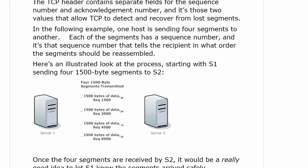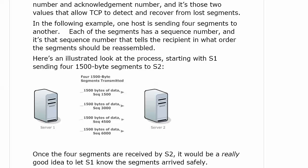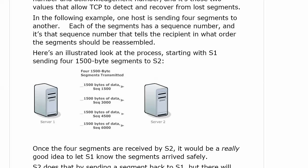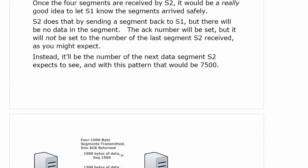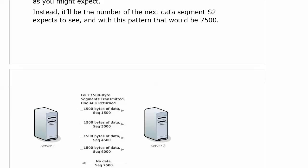That sequence number tells the recipient in what order the segments should be reassembled. We've got four 1,500-byte segments transmitted, and I'm using sequence numbers starting with 1,500 and incrementing by 1,500. In real life these values can be 8, 9, 10 digits long or even longer. Once the four segments are received by server 2, it would be a good idea to let server 1 know the segments arrived safely. The ACK number will be set to the segment number server 2 expects to see next — in this pattern, that would be 7,500.